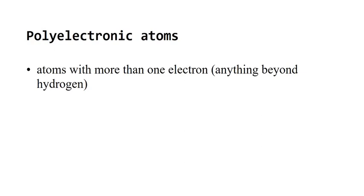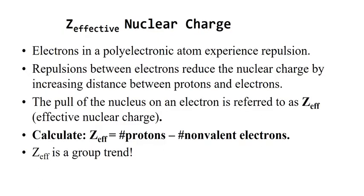Polyelectronic atoms — that means atoms with more than one electron, anything beyond hydrogen. Most research about the atom began with hydrogen and many assumptions were made after. When we talk about polyelectronic atoms, we're discussing things that are very difficult to research at the atomic level regarding electron configurations. Next, Z-effective nuclear charge: a phenomenon we observe in atoms that dictates atomic behavior.